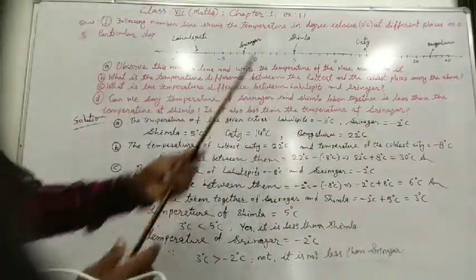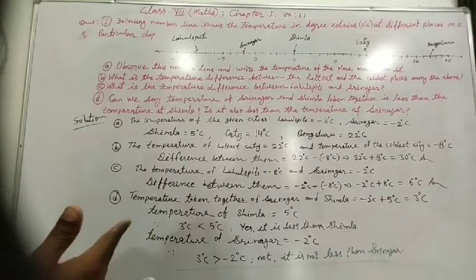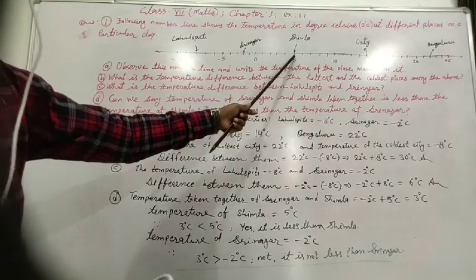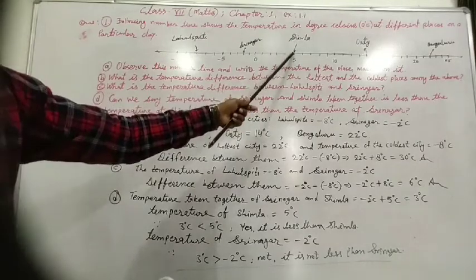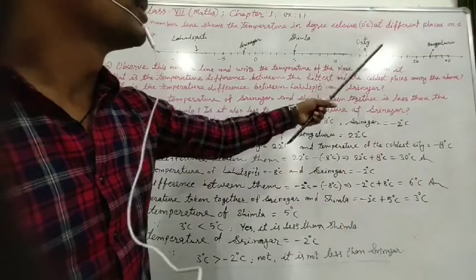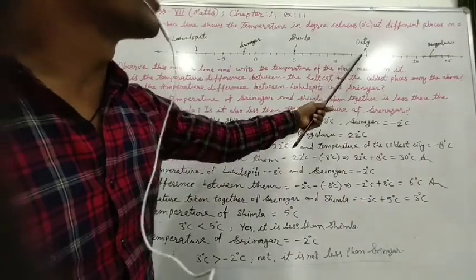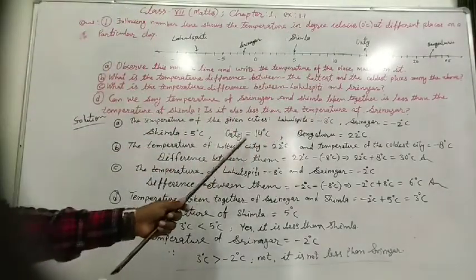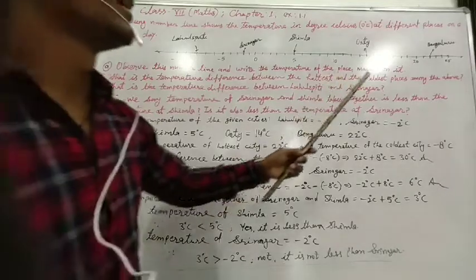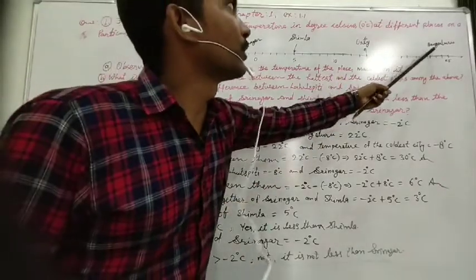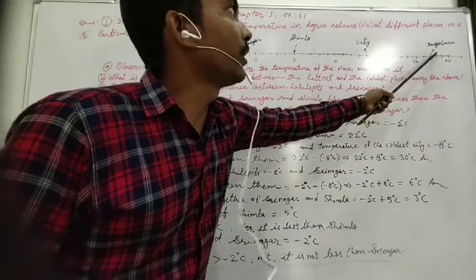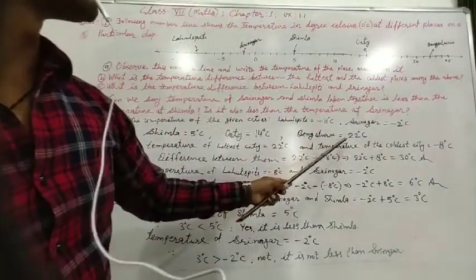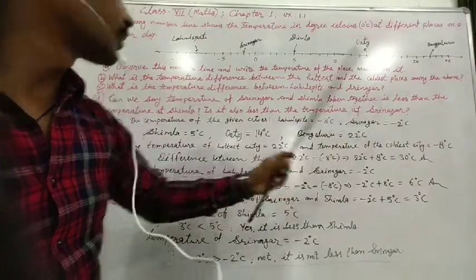On the right-hand side from 0, all values will be positive. Temperature of Simla equals plus 5 degrees centigrade. Temperature of Ooty: counting 10, 11, 12, 13, 14 — plus 14 degrees centigrade. Temperature of Bangalore city: 20, 21, 22 — 22 degrees centigrade. Bangalore temperature is 22 degrees centigrade. Part A is complete.